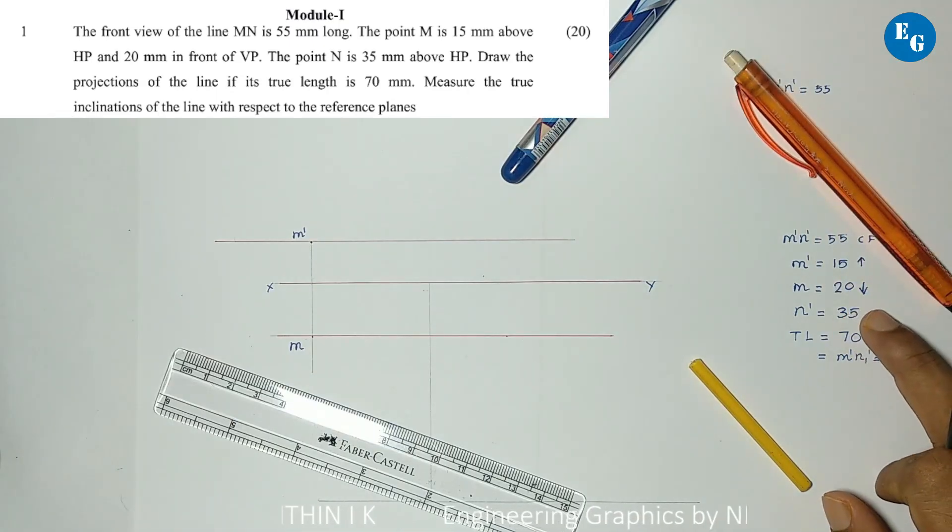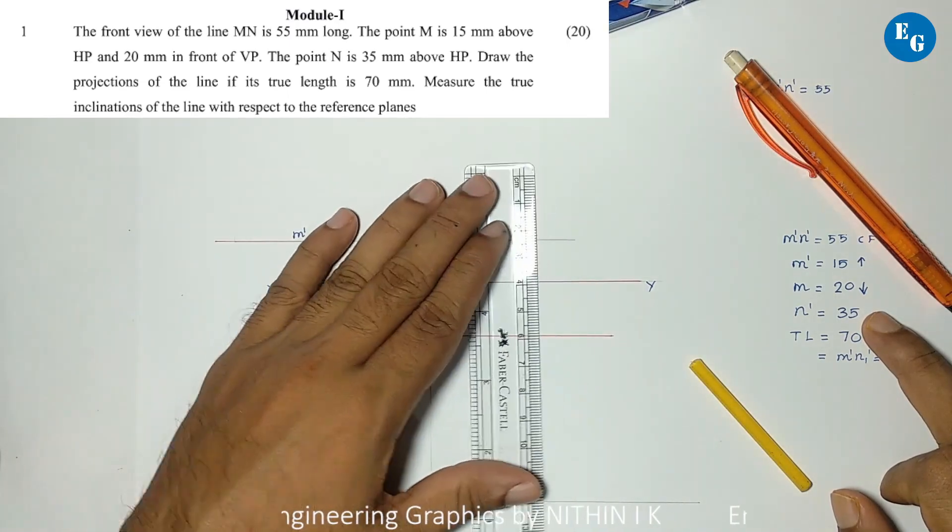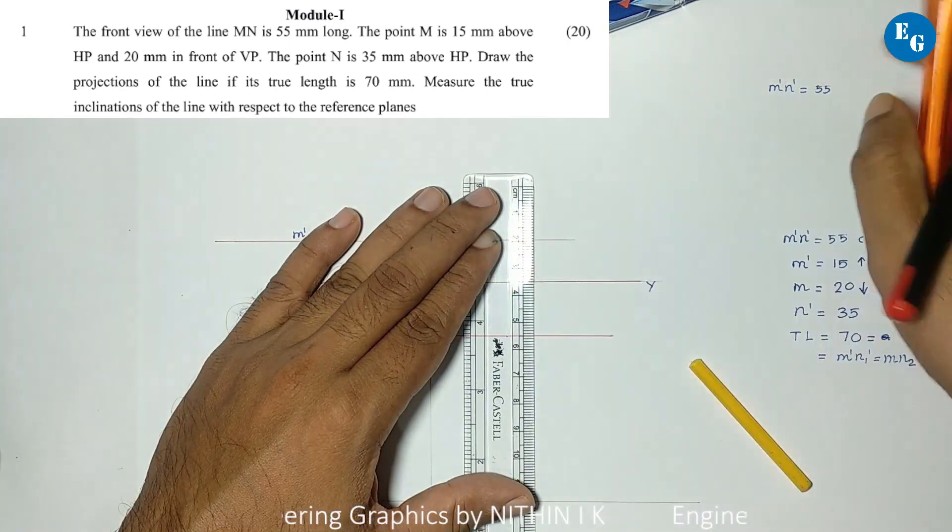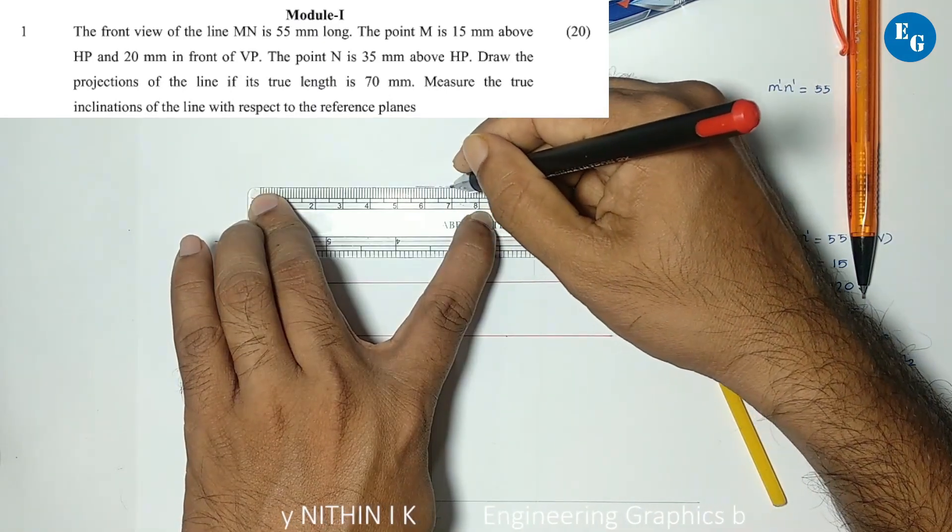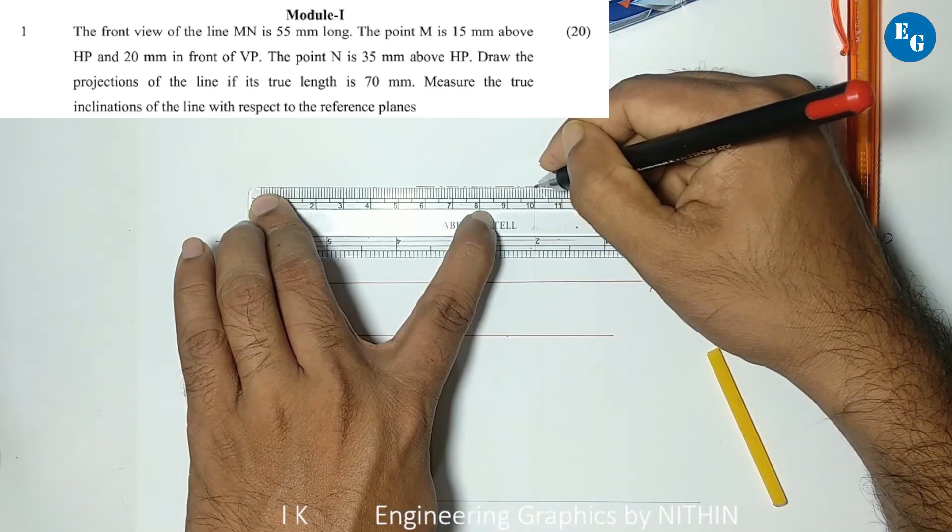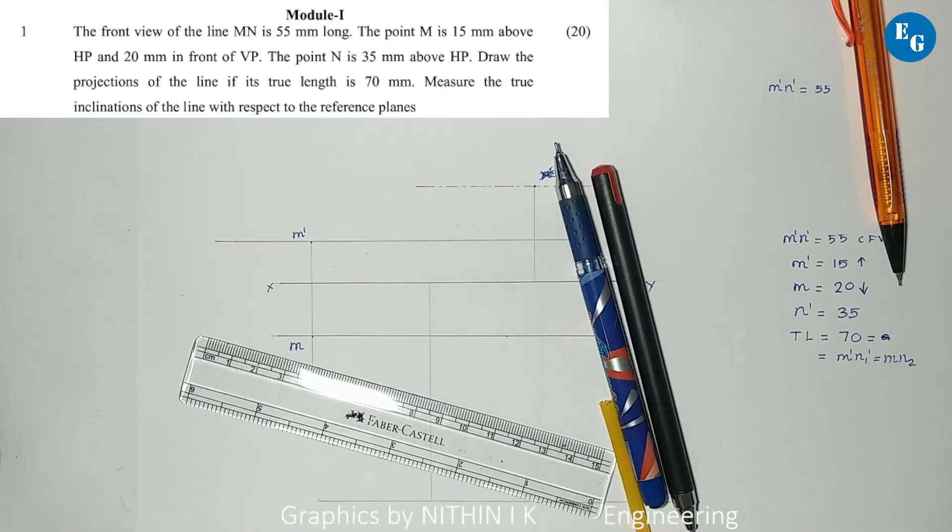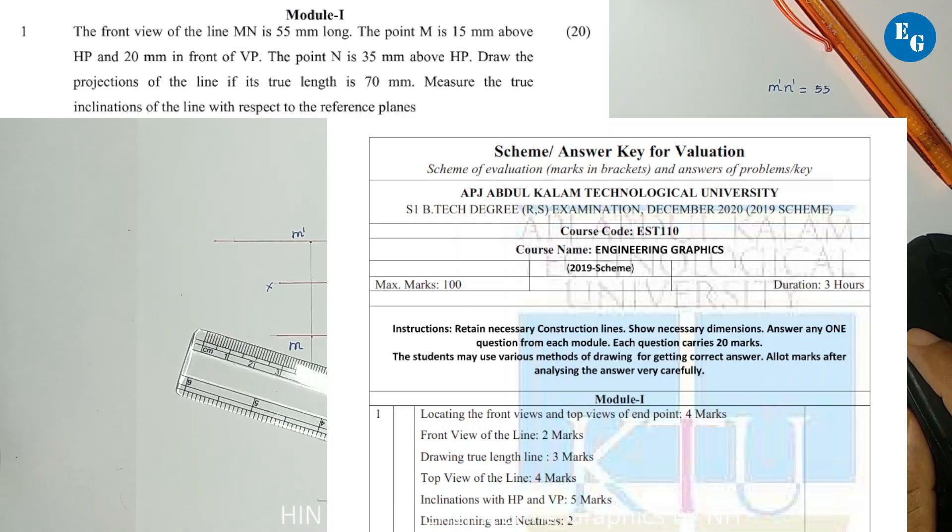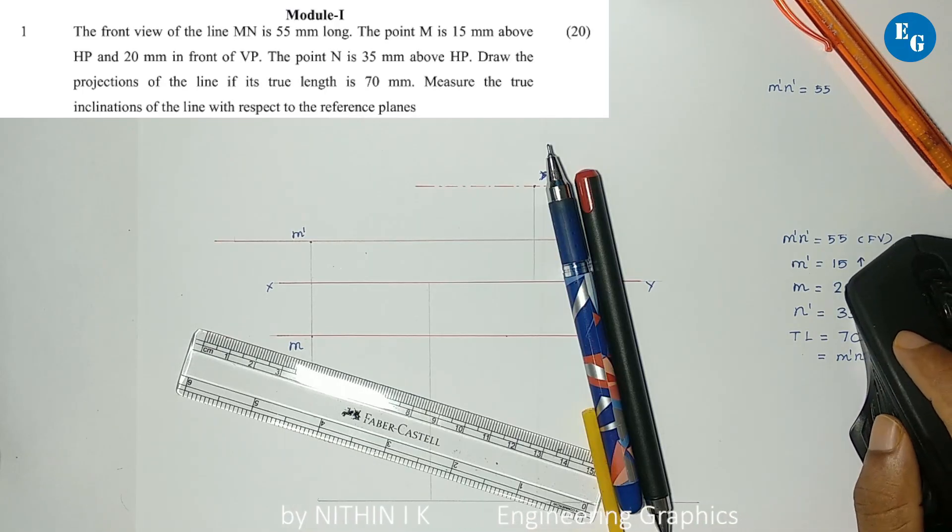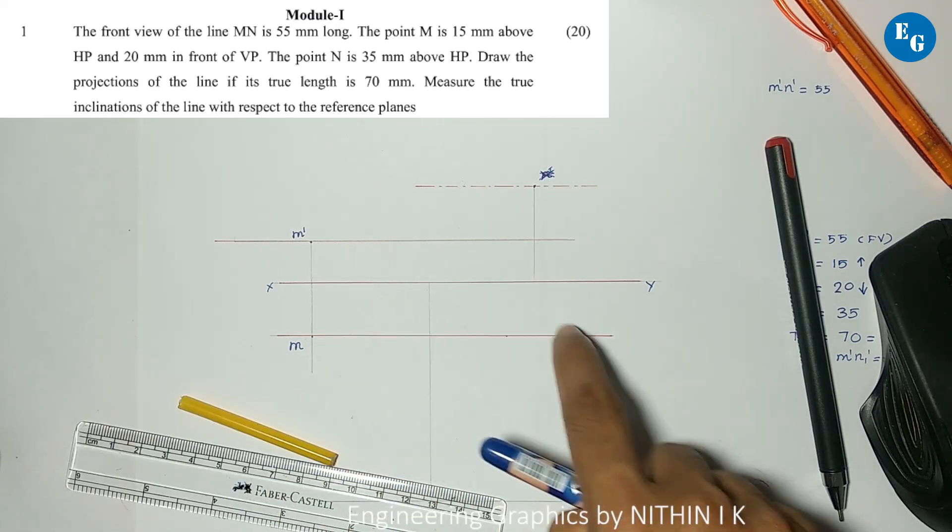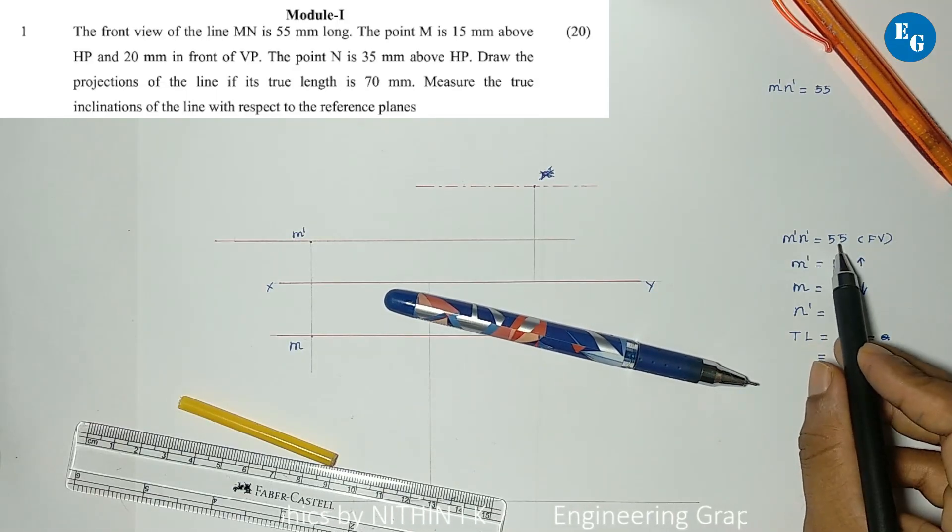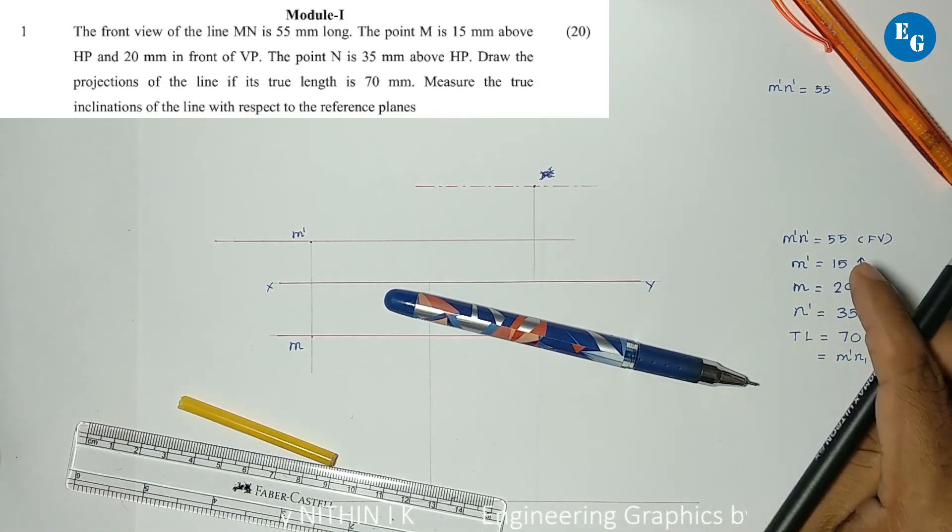Next step is N dash 35mm above HP, which is 35mm above XY line. N dash locus is located here. Locating front view and top view of end points is worth 4 marks. M dash and N dash are located.